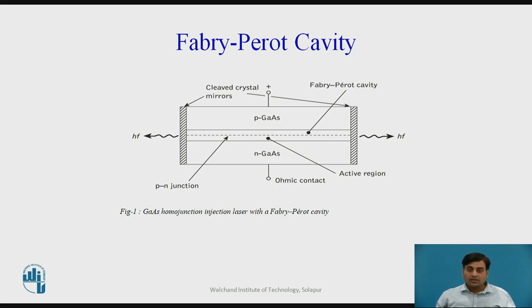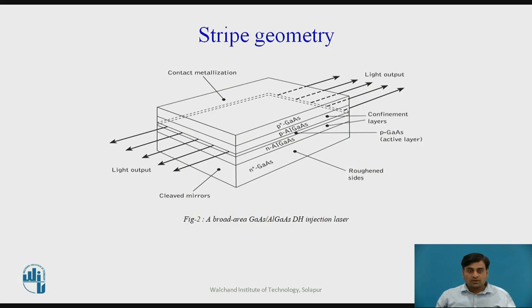Improved carrier containment and lower threshold current were achieved using heterojunction structures. The double heterojunction injection laser provides both carrier and optical confinement on both sides of the p-n junction, giving the injection laser greatly enhanced performance. However, in order to provide reliable operation of double heterojunction injection laser, further carrier and optical confinement was necessary, leading to the introduction of strip geometry double heterojunction laser configurations. The double heterojunction laser provides optical confinement in the vertical direction through the refractive index step at the heterojunction interfaces, but lasing takes place across the whole width of the device, as illustrated in figure 2.